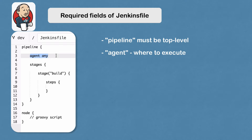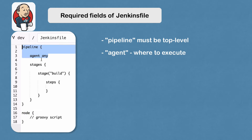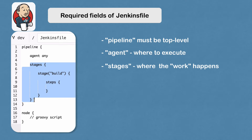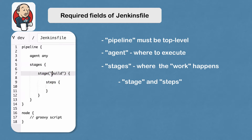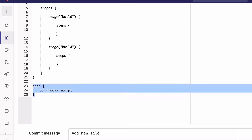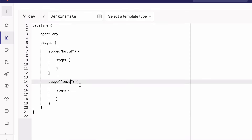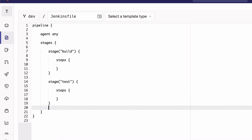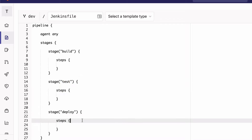These two are equivalent to this one here and are required attributes — you always have to use them. The next required attribute is 'stages,' and this is where the whole work actually happens. You have different stages of that pipeline, and inside stages you define a stage name. You can define as many stages as you want. Usually you have something like a build stage, a test stage, and then a deploy stage.